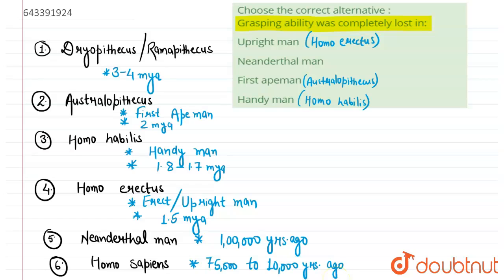All right, so coming on to the question again: what is the grasping ability? Grasping ability is the evolution of hands, and more importantly the thumb, because this is the most important structure that helps in holding something or that helps in the grasping.